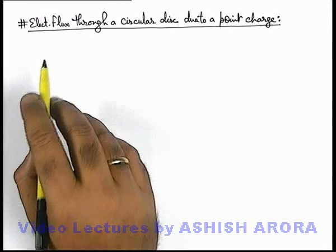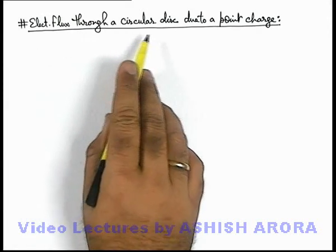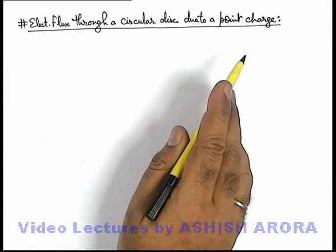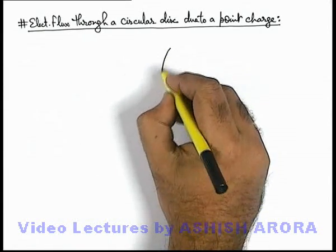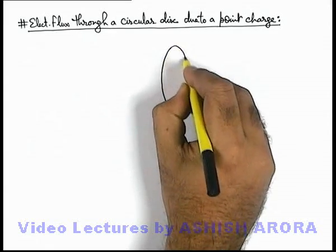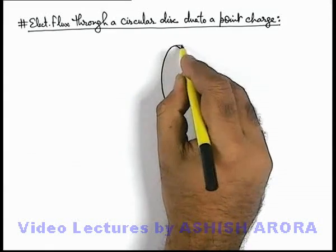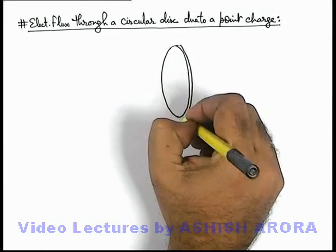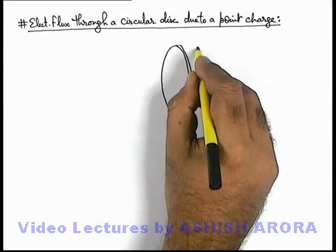Let's study the calculation of electric flux through a circular disc due to a point charge. If we consider a circular disc which is of small thickness and radius r.